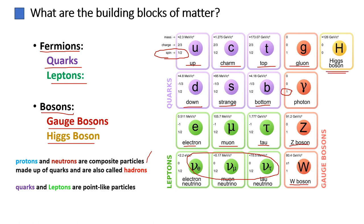These elementary particles are the smallest known constituents of matter and are currently considered indivisible. Quarks and leptons are considered to be point-like particles without any internal structure. Understanding the properties and interactions of these particles is fundamental to our understanding of the universe and the forces that govern matter at its most fundamental level.